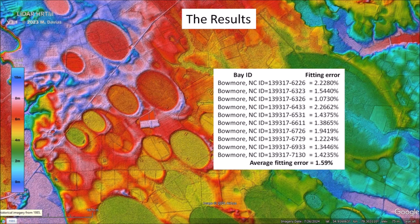I ran the program on approximately 60 digitized images and as expected, well-preserved Carolina bays like those near Bowmore, NC, were found to have a mathematically elliptical geometry with an average fitting error of 1.59%.